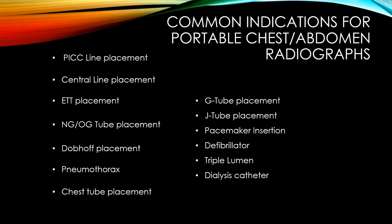Common indications for portable chest and abdomen radiographs include: PICC line placement, central line placement, ET tube placement, NG and OG tube placement, Dubhoff placement, pneumothorax, chest tube placement, G tube placement, J tube placement, pacemaker insertion, defibrillator, triple lumen, and dialysis catheter.